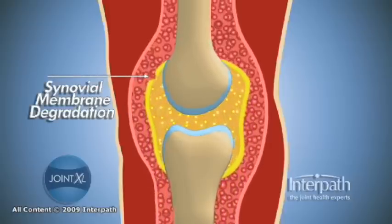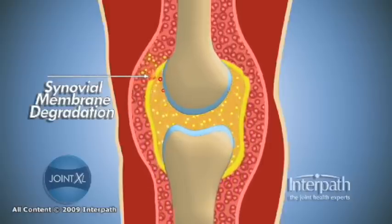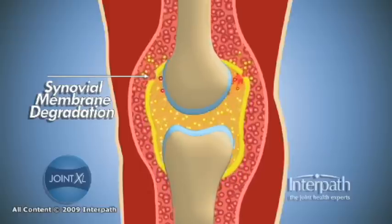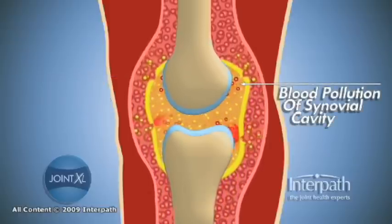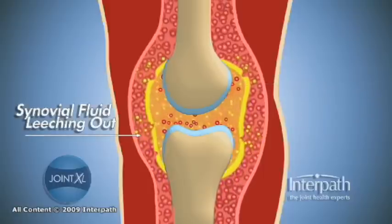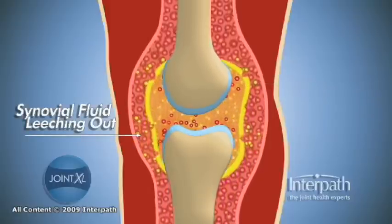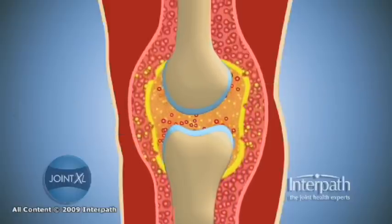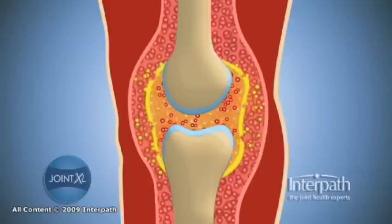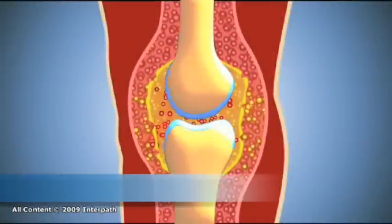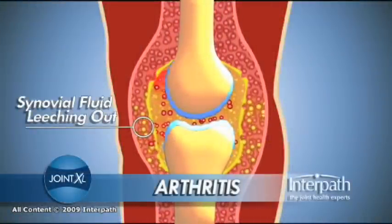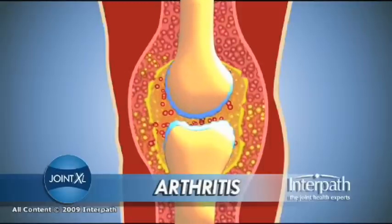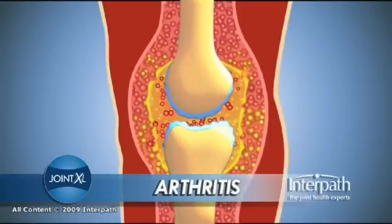The synovial membrane becomes leaky as gaps appear, and it can no longer properly control the composition of the synovial fluid. Hyaluronic acid is able to leak out of the gaps and blood begins to leak in, bringing with it inflammatory cells which produce even more damaging chemicals. As hyaluronic acid leaks out of the synovial fluid, the fluid becomes thin and watery and no longer able to properly lubricate the cartilage.